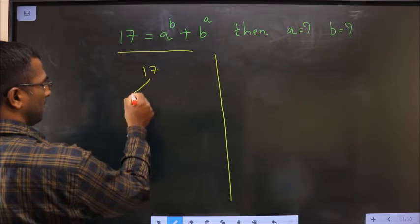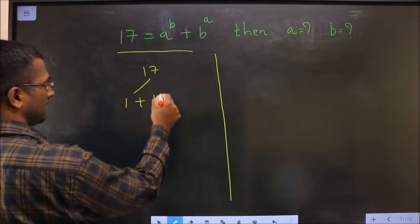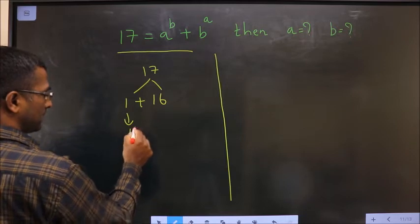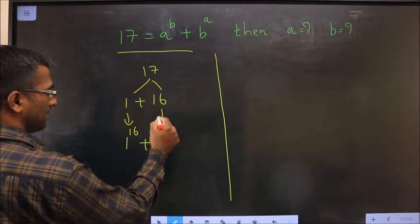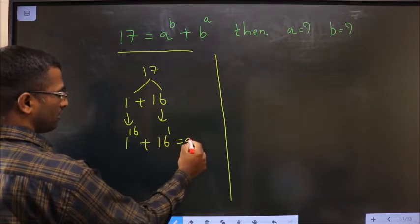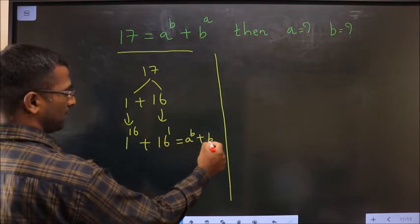17 can also be written as 1 plus 16. 1 can be written as 1^16 plus 16 can be written as 16^1. Now, this is of the form a^b plus b^a.